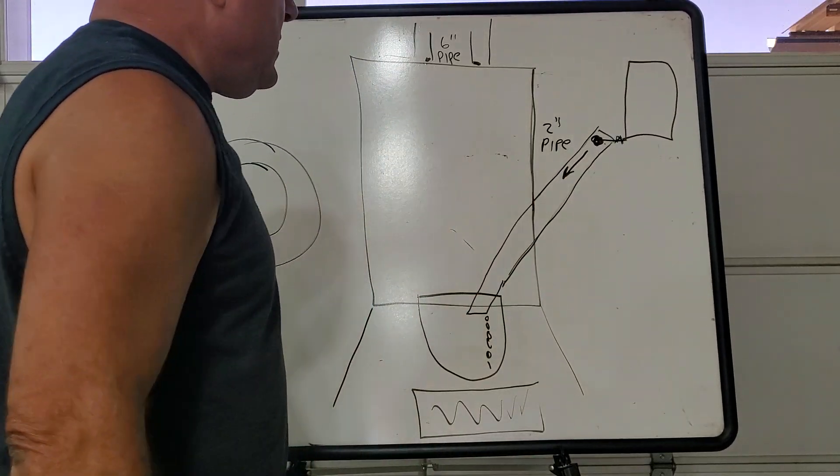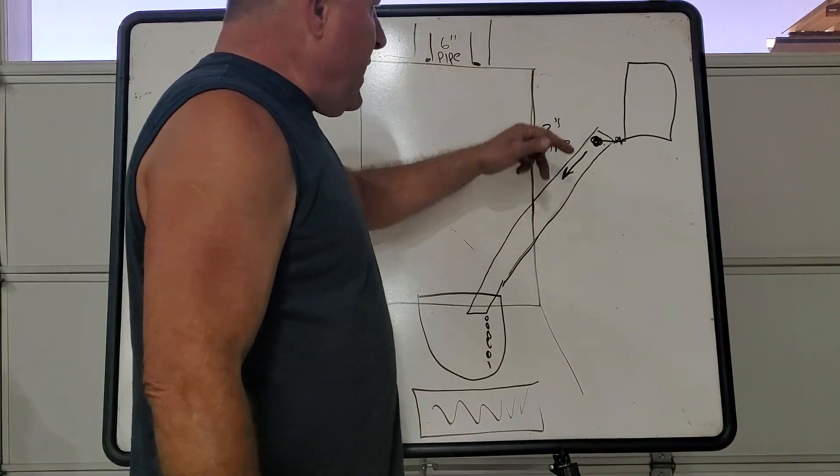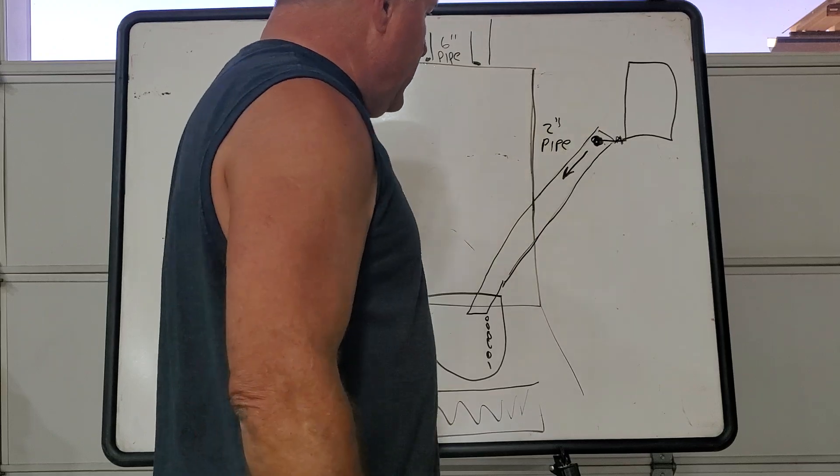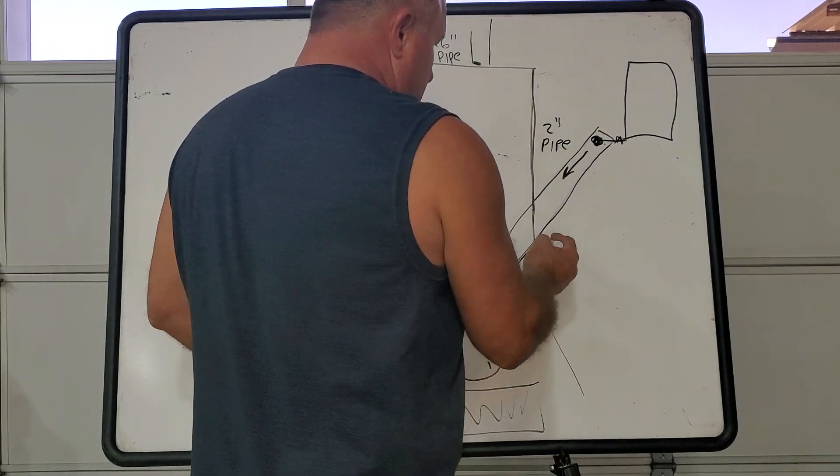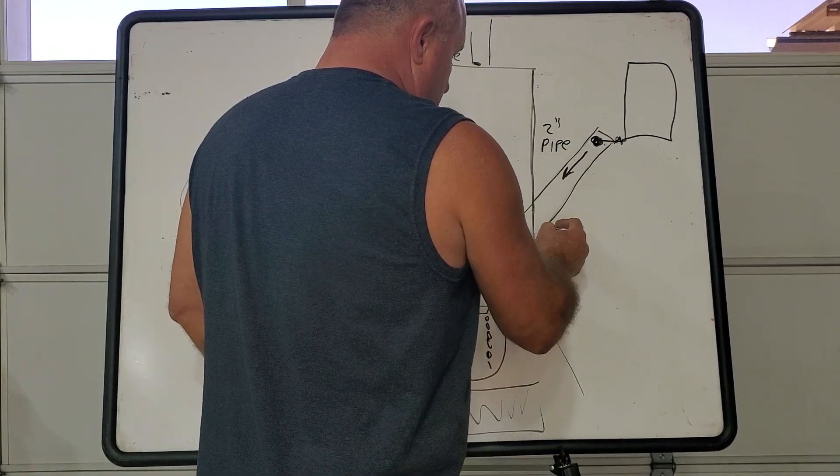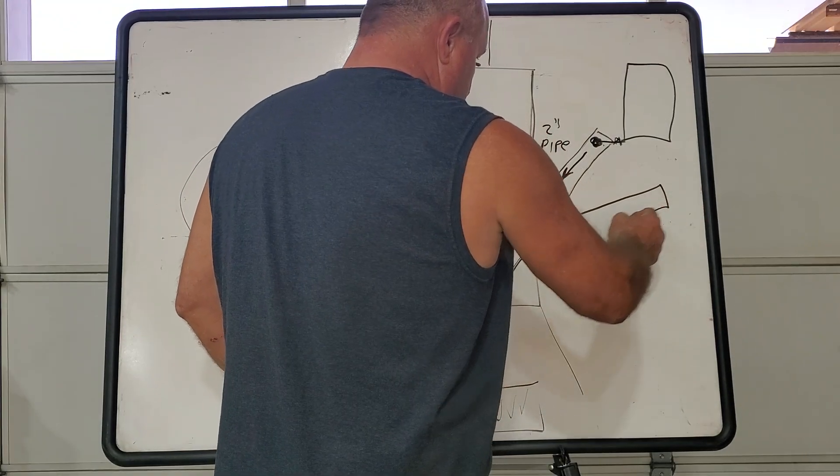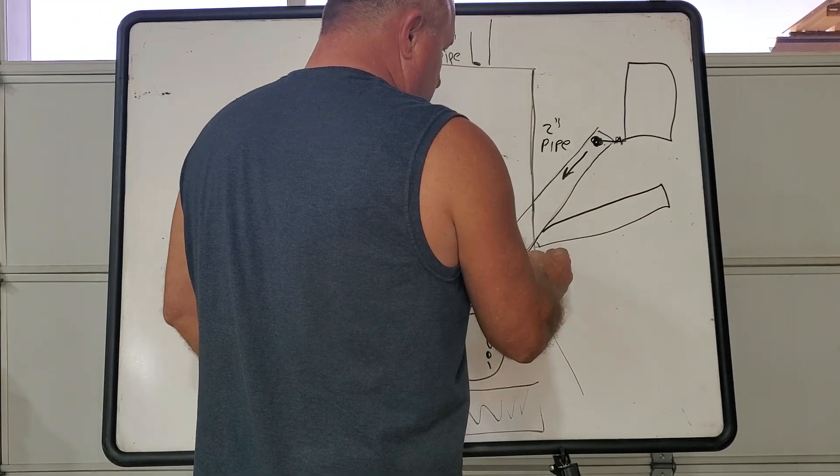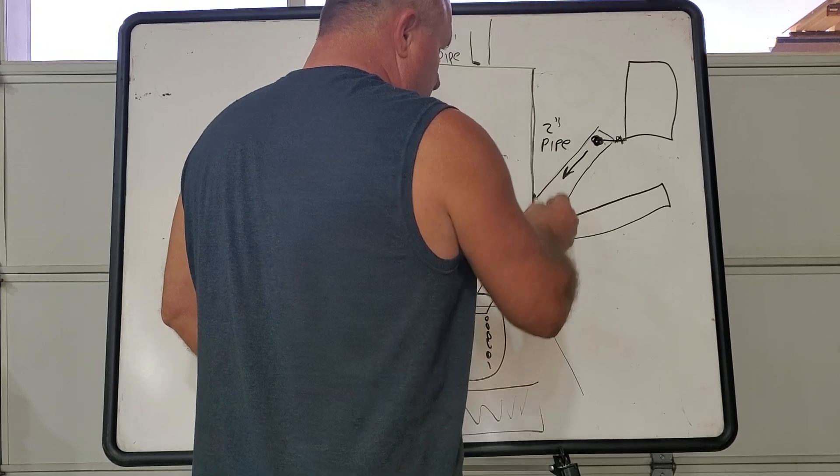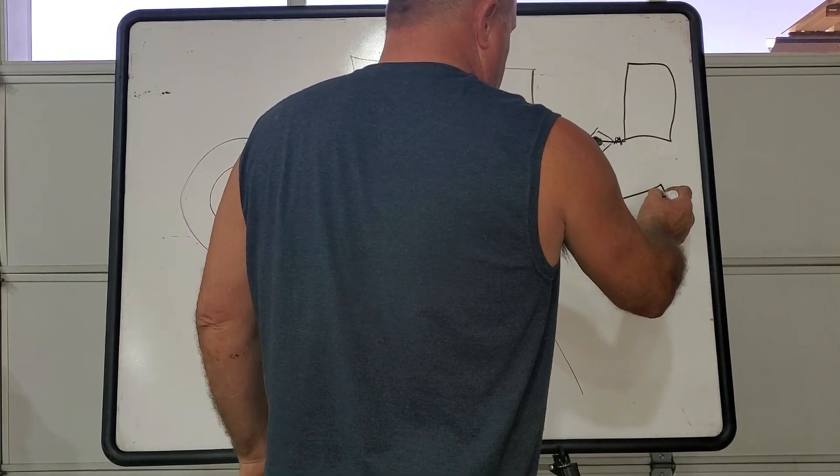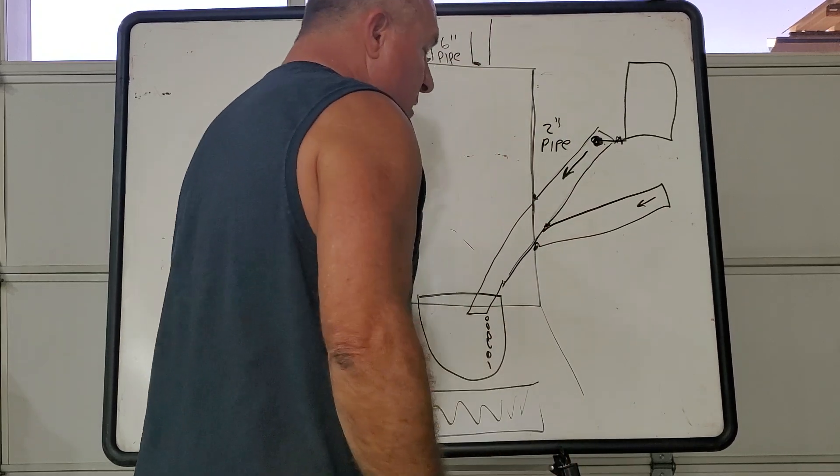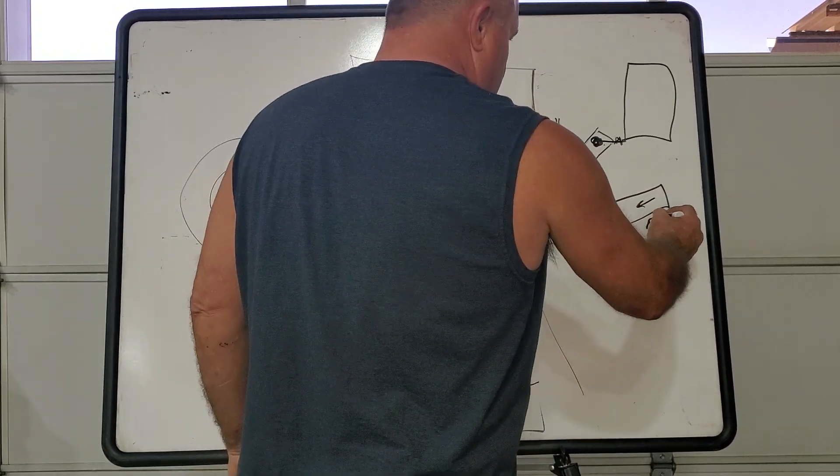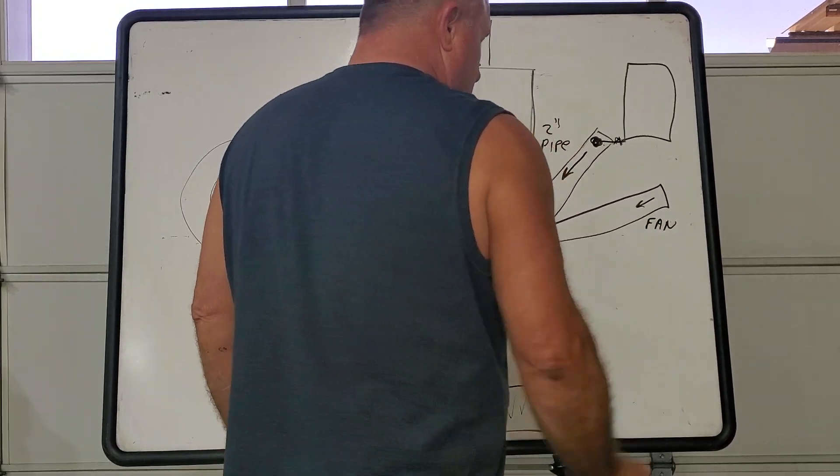Now, the old way I'd put a fan on top of this right here, which is fine, but the new way I've been cutting in a pipe like this, making a weld here, making a weld here, making a weld here, and this is where my turbo air comes in. So I put my fan right here on this one.